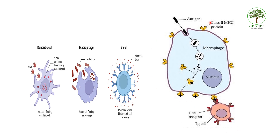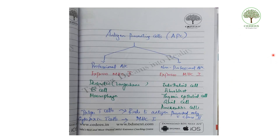Antigen presenting cells express class 2 MHC. Professional APCs include dendritic cells, B cells, and macrophages, which express MHC class 2. Non-professional APCs include endothelial cells, fibroblasts, thymic epithelial cells, glial cells, and pancreatic cells, which express MHC class 1. Helper T cells only bind to antigens presented on class 2 — this is called MHC class 2 restriction. Cytotoxic T cells bind to antigen presented with MHC class 1 — this is MHC class 1 restriction.